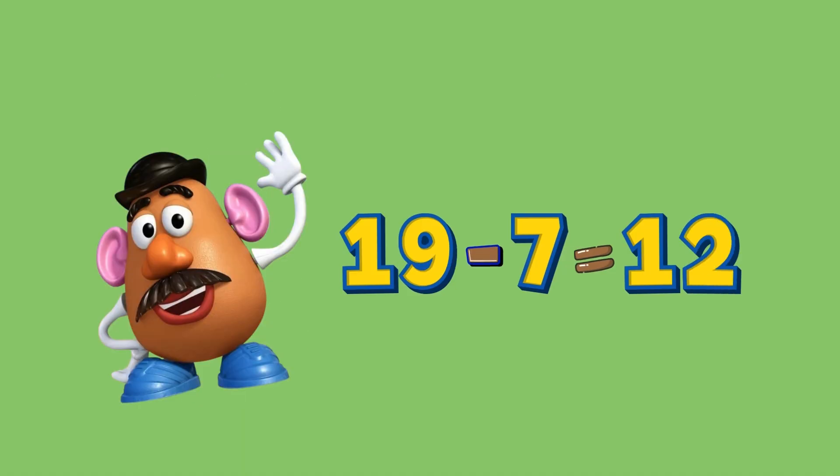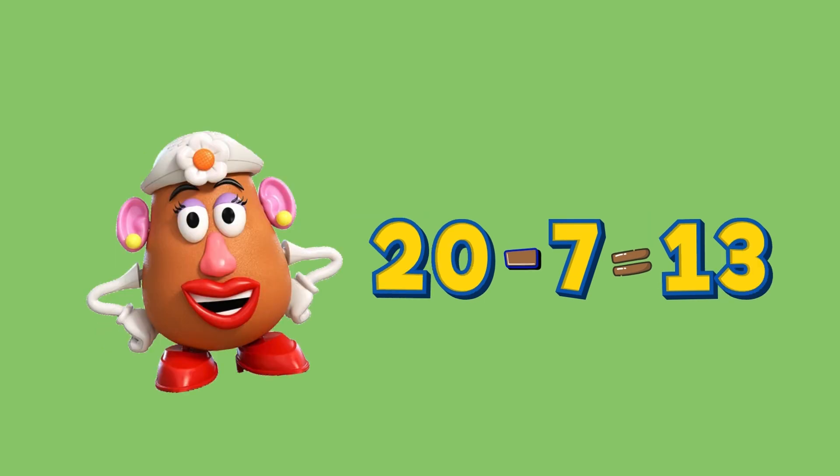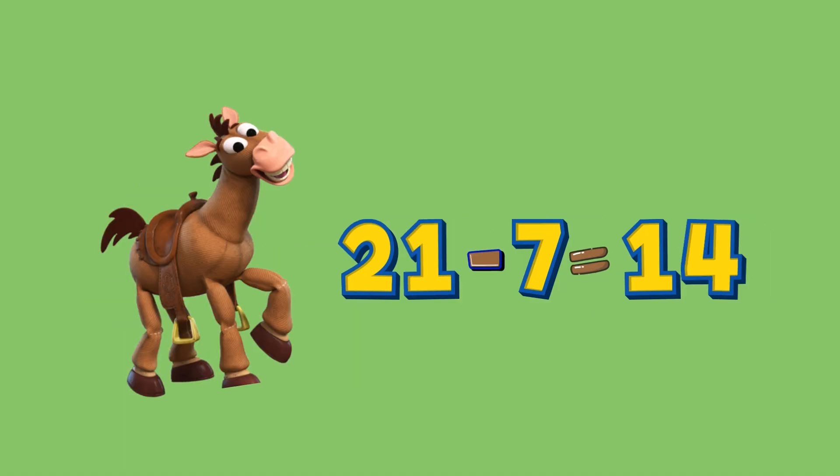Nineteen minus seven equals twelve. Twenty minus seven equals thirteen. Twenty-one minus seven equals fourteen.